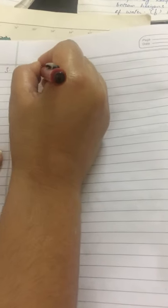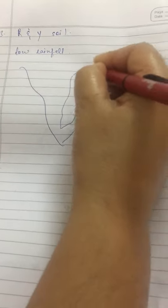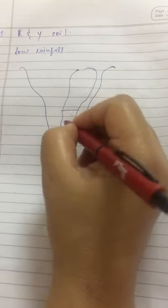The third type of soil is red and yellow soil. Red soils are developed in areas of low rainfall in the eastern and southern parts of Deccan Plateau. This is the Deccan Plateau and this is the eastern part and the southern part.